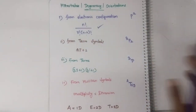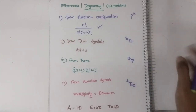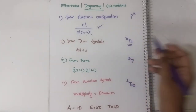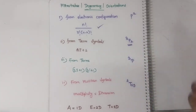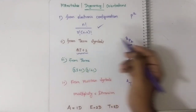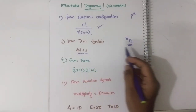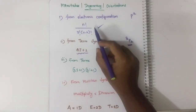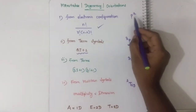Suppose if they are giving you some term symbol, then what is the formula? It is very simple: 2J plus 1. From electronic configuration, this is the formula.